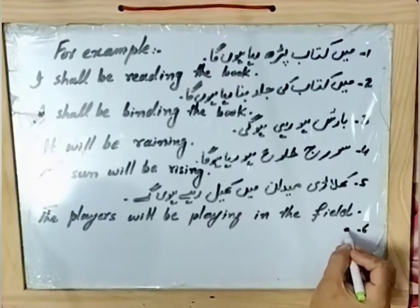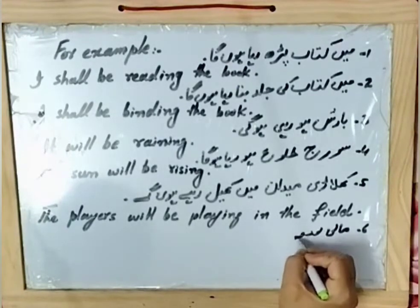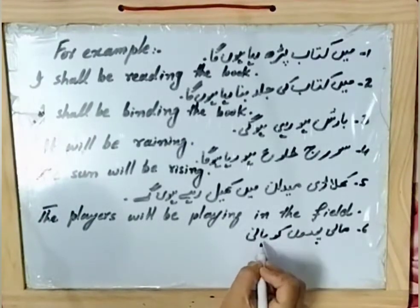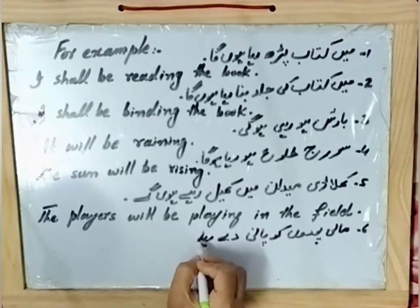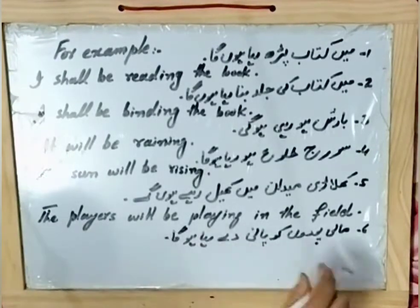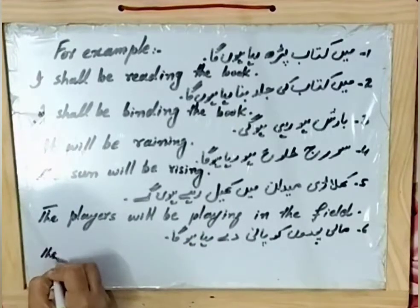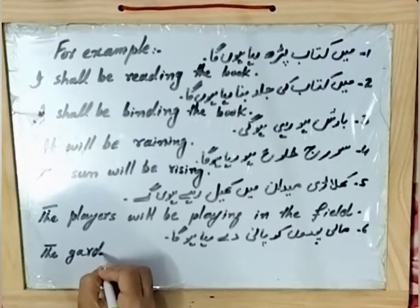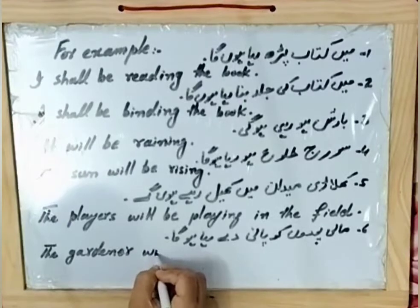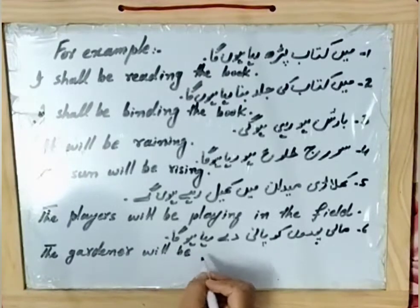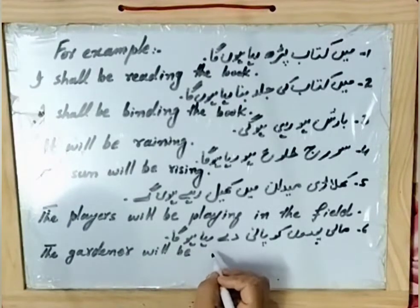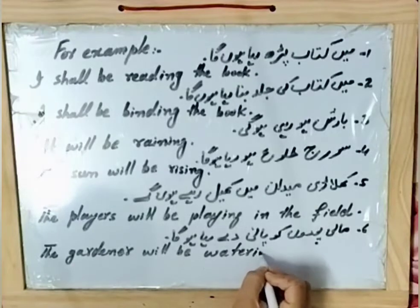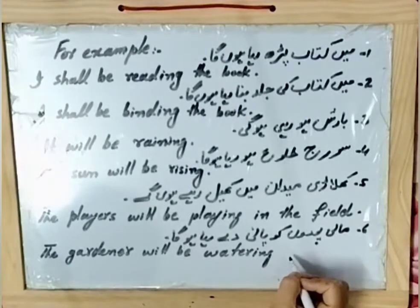Example number six: 'Maali paudoN ko paani de raha hoga' — the gardener will be watering the plants. Subject: 'maali' — 'the gardener.' Helping verb: 'will be.' The English for giving water to plants is 'watering.' Object: 'the plants.' So: the gardener will be watering the plants.